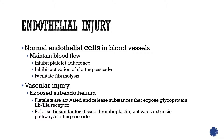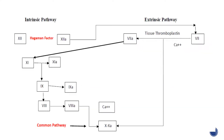Normally, endothelial cells in blood vessels maintain blood flow by producing substances that inhibit platelet adherence, activation of the clotting cascade, and facilitate fibrinolysis. Vascular injury results in exposure of the sub-endothelium, which activates platelets. The activated platelets release substances that expose glycoprotein 2b3a receptor complex into the circulation, causing platelets to adhere to one another. Simultaneously, damaged vascular tissue releases tissue thromboplastin — also known as tissue factor — which activates the extrinsic pathway of the clotting cascade.